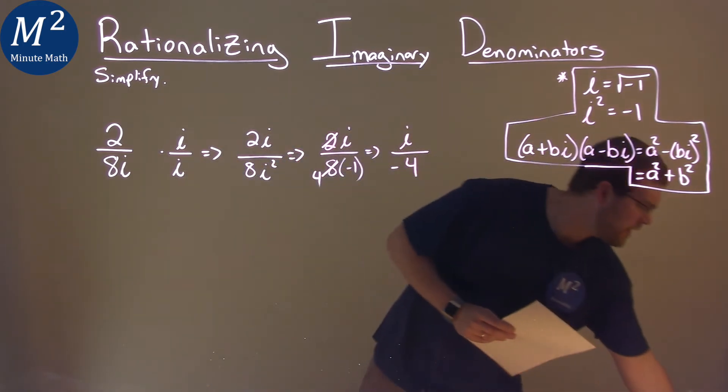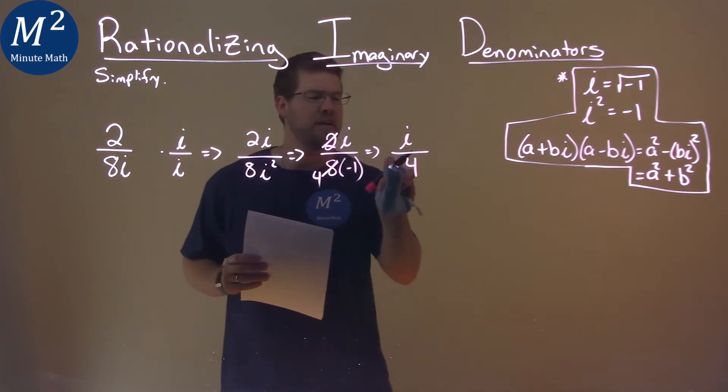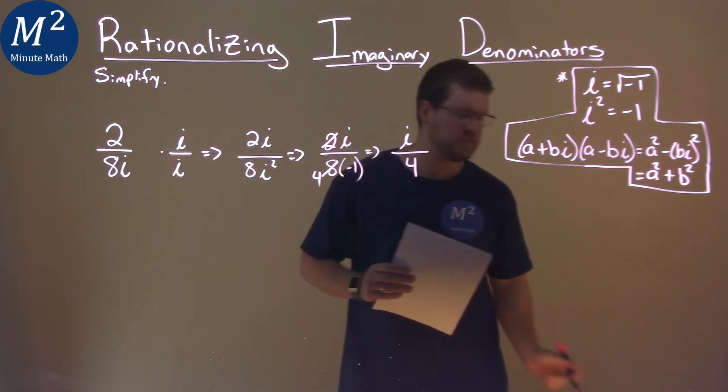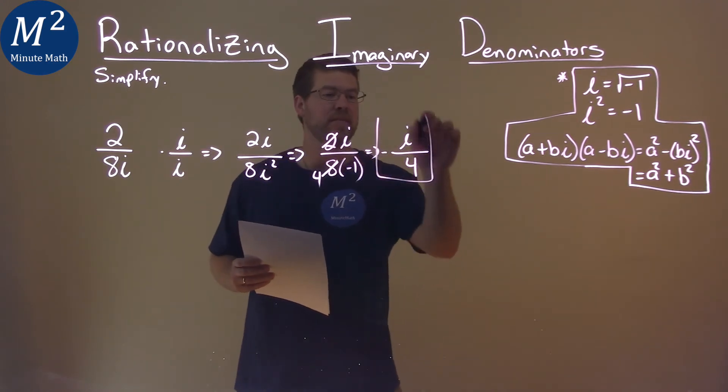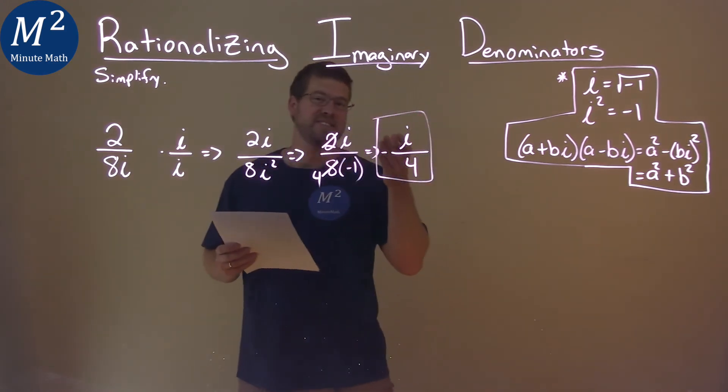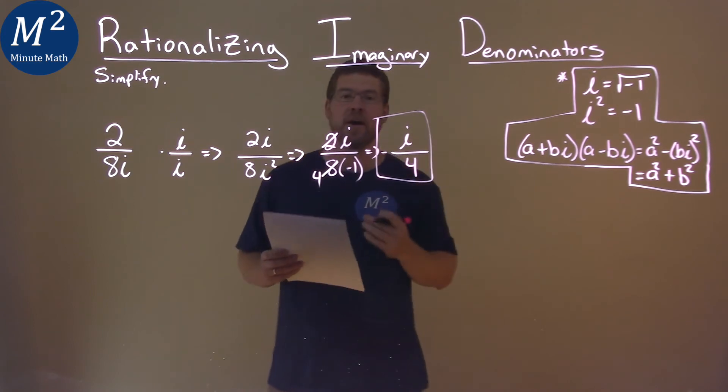And the negative, you put that negative out front. You don't have to actually have it in the denominator here. So you just put it right here if you want. And there we have our answer. You can see it. Our final answer here is just negative i divided by 4.